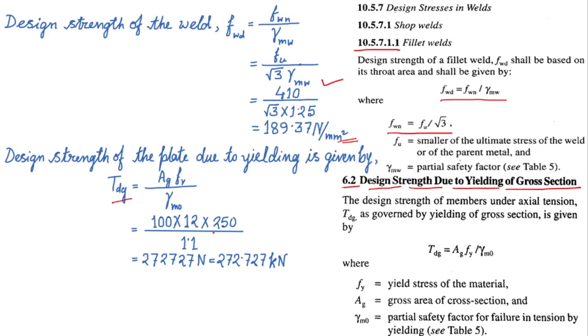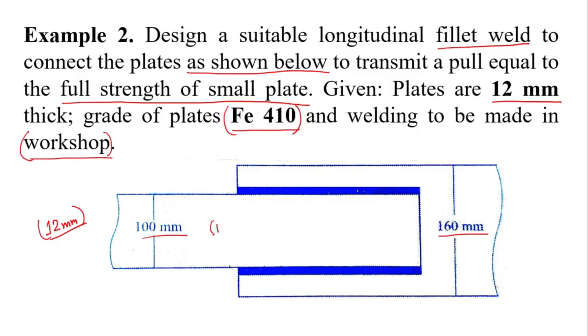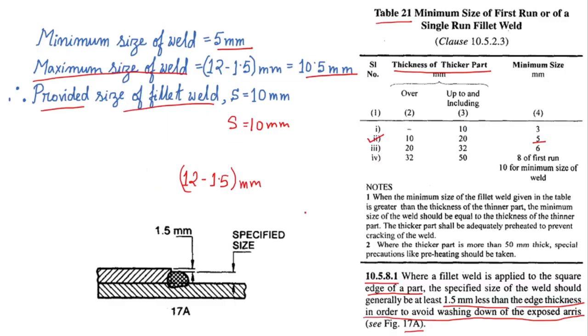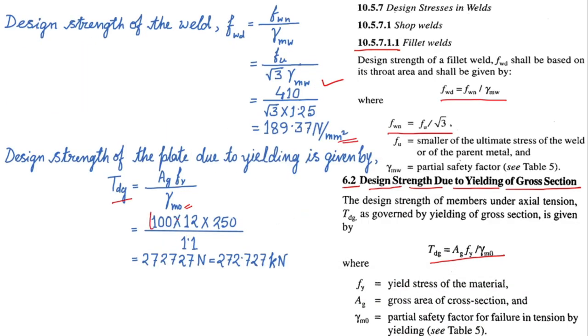Next, design strength of the plate due to yielding, denoted by Tdg. I have used this formula for Tdg, which is equal to A times fy divided by gamma m0. Gamma m0 is taken from table number 5. So the thickness of the thinner plate is, if you see the figure, 100 by 12.